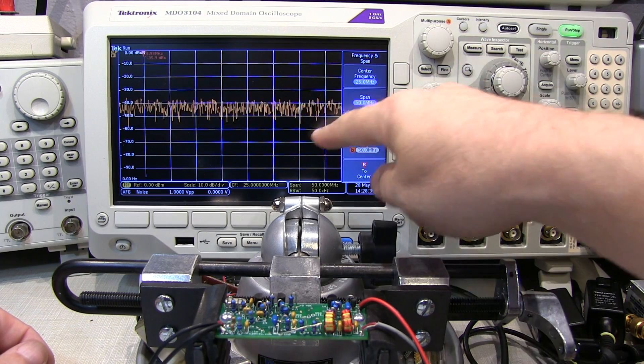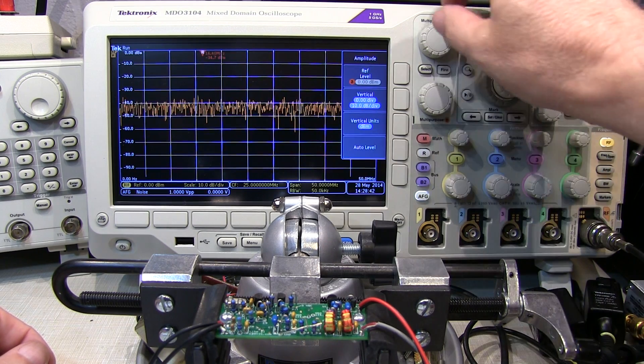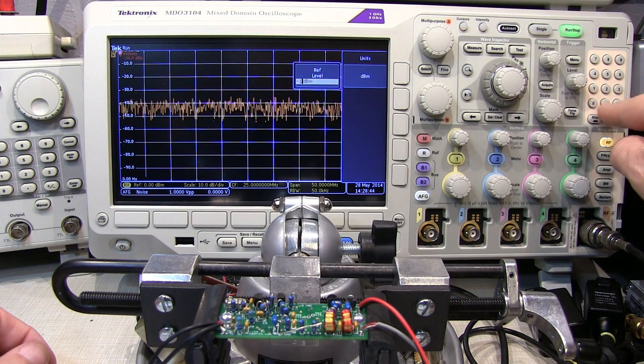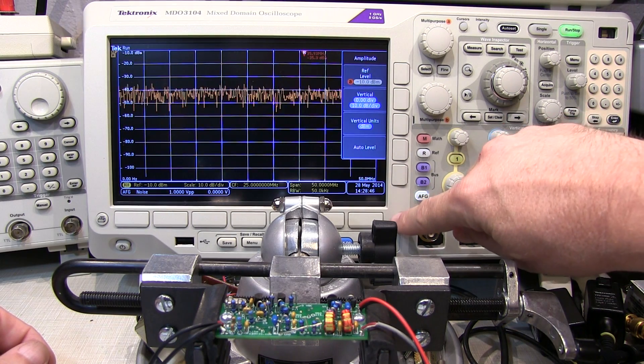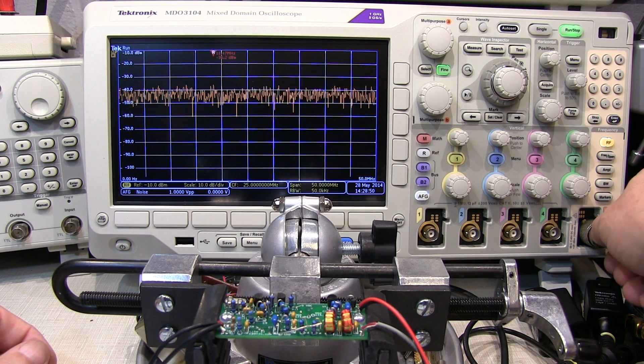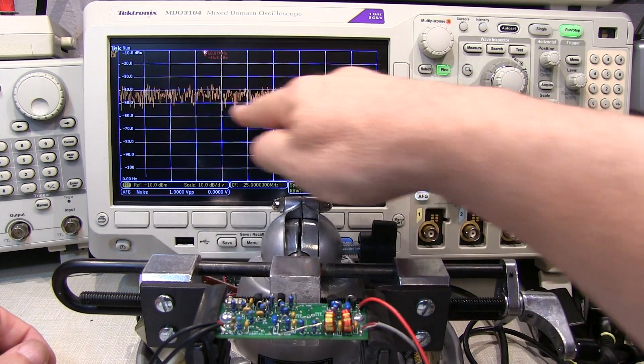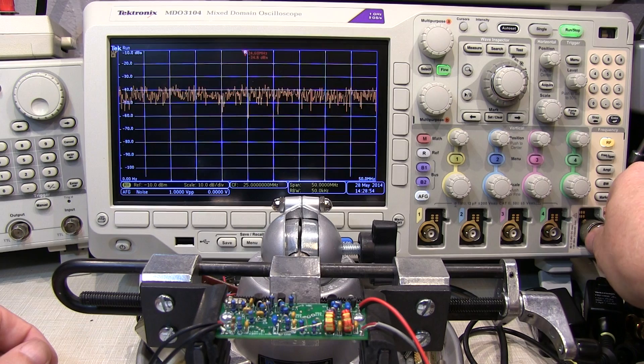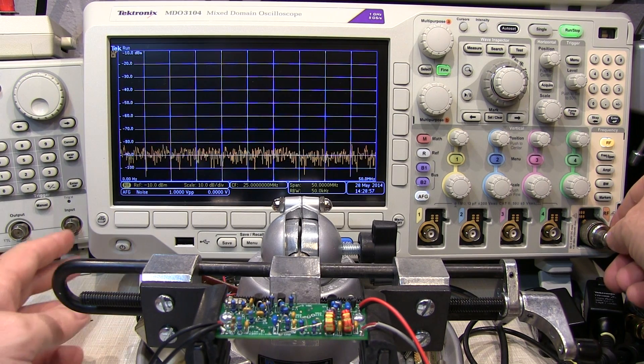Okay, and we can see I've got a nice flat noise power here. So I'll adjust the reference level down to minus 10 dBm or so. And now we can see what that noise signal looks like in the frequency domain. It's basically pretty flat. If I pull that signal back out again, we can see how it drops down.